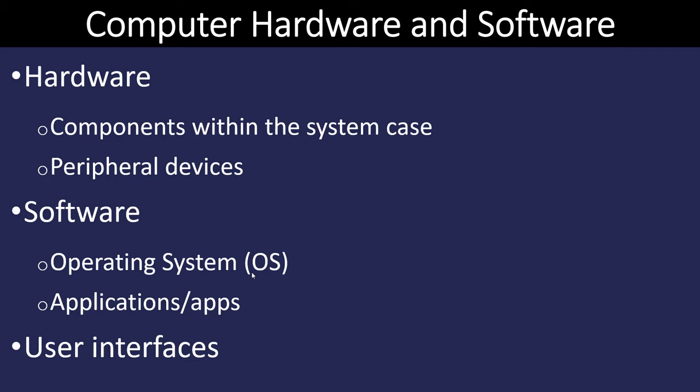The last category to cover is user interfaces. There are two types: a graphical user interface, which is what we typically work with on our computers, where we use the mouse or a touch screen to move objects around on the screen. The other is the command line interface, frequently called CLI, where we type commands on a line and have the computer carry them out.